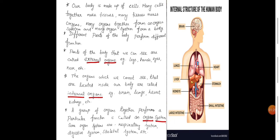A group of organs together perform a particular function is called an organ system. Some organ systems are respiratory system, digestive system, skeletal system, etc.